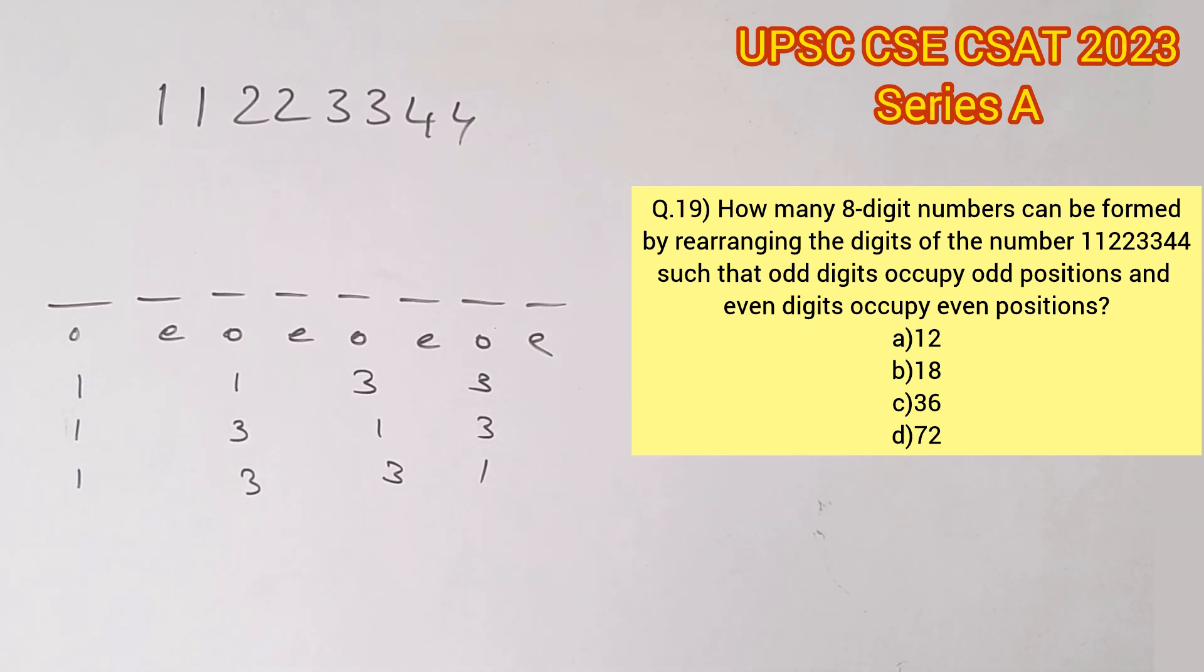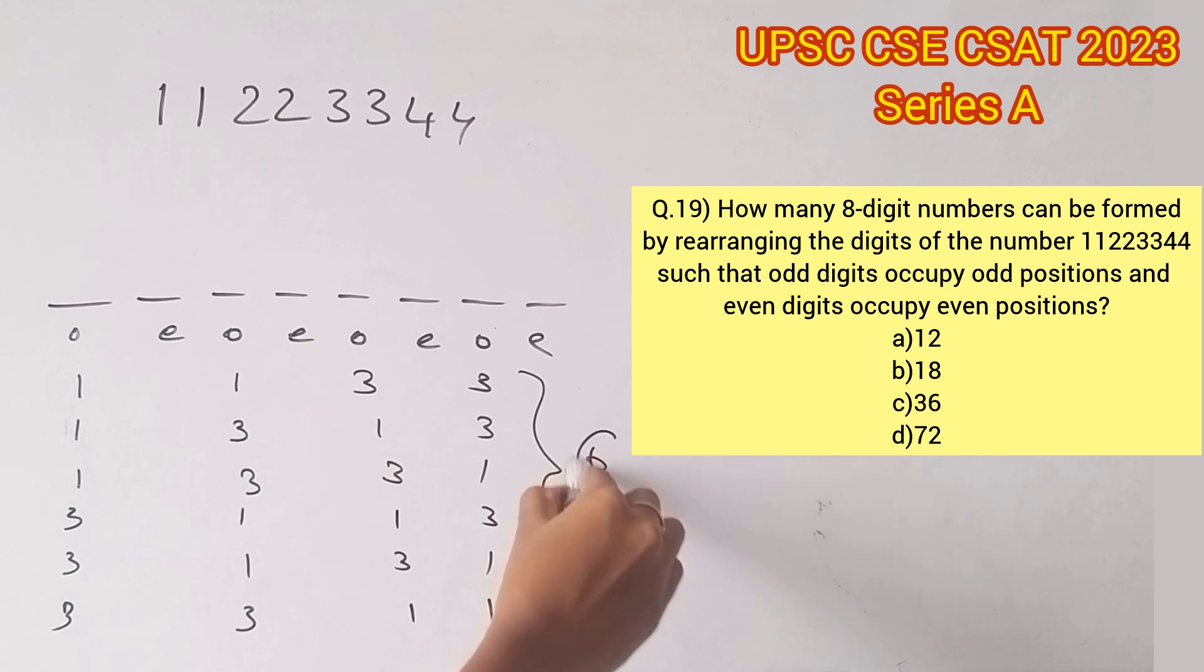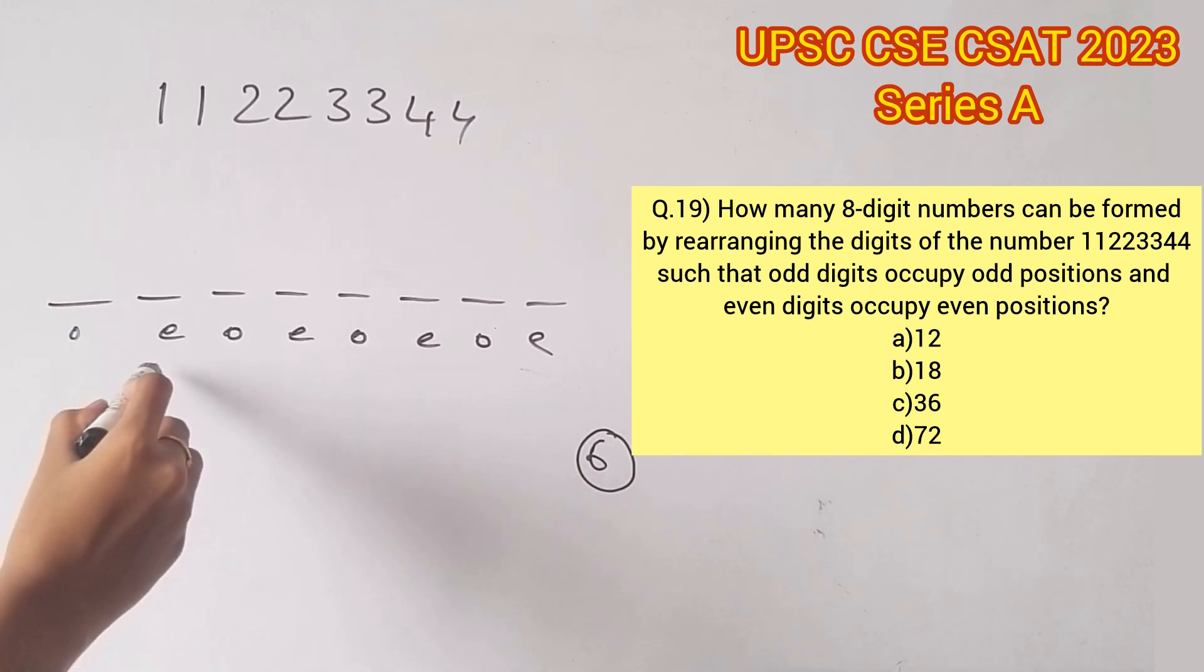we consider the first odd digit to be 3, we have three other possibilities which are as follows. So we have a total of six different possibilities just with the odd places. Repeating the same process for the even places